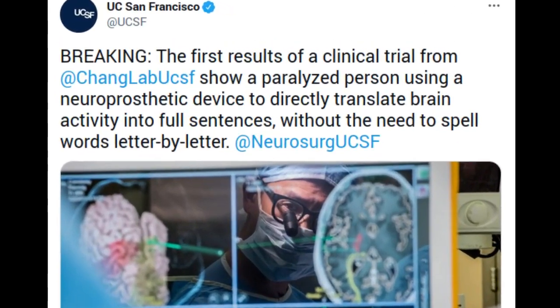Researchers at UC San Francisco have successfully developed a speech neuroprosthetic that has enabled a man with severe paralysis to communicate in sentences, translating signals from his brain to the vocal tract directly into words that appear as text on a screen.